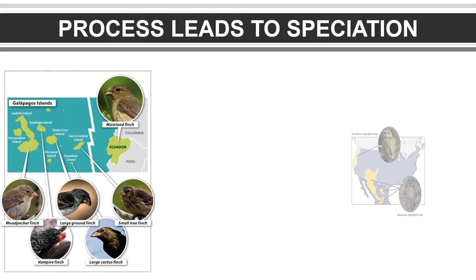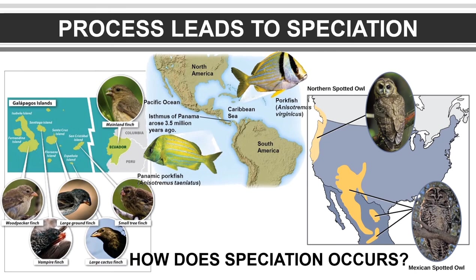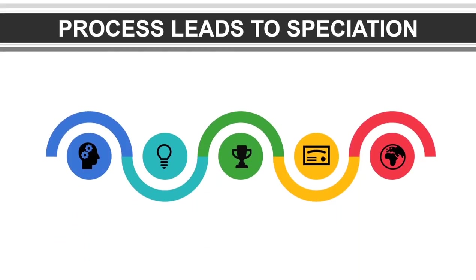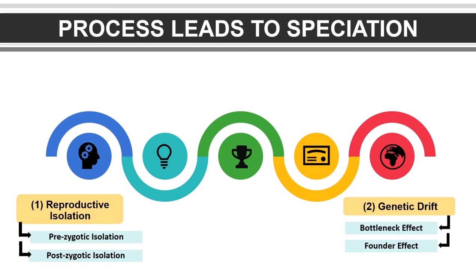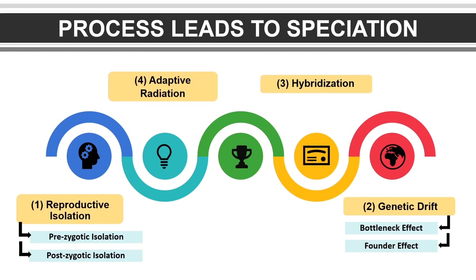Students, do you know how the process of speciation occurs? There are four processes that lead to speciation. First, known as reproductive isolation, which involves pre-zygotic isolation and post-zygotic isolation. Second is genetic drift, which involves bottleneck effect and founder effect. The third one is hybridization. And lastly, adaptive radiation.